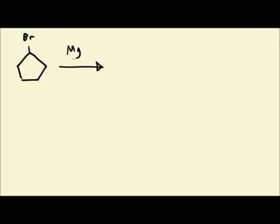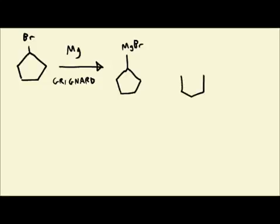The first step in the synthesis of ketamine involves bromocyclopentane reacting with magnesium metal to generate a Grignard reagent. We'll react it with this substituted aromatic nitrile.